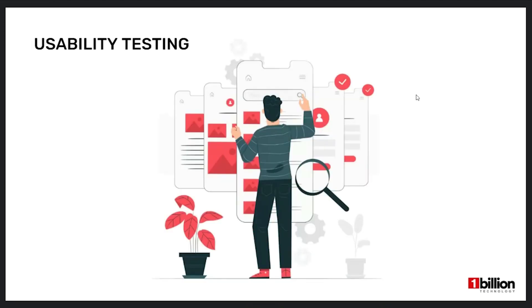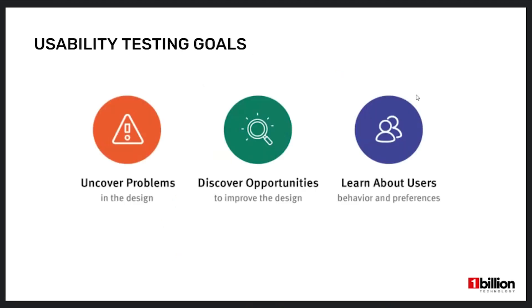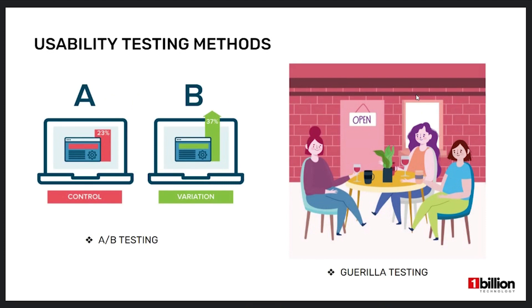Empathize means understanding the user's viewpoints about a specific problem. Ideate is about getting ideas for how we would solve a specific problem that our target audience is facing. In testing we can test a prototype to make sure that the solution we have created is usable for our target audience. Next is usability testing. Usability testing is the observation of users trying to carry out tasks with the product. Testing can be focused on a single process or be much more wide-ranging. The goals of usability testing include identifying problems in the designs, uncovering opportunities to improve, and learning about target users' behavior and preferences. One method is AB testing, which is offering alternative versions of a product to different users and comparing the results to find out which performs better — a great technique for optimizing funnels and landing pages.